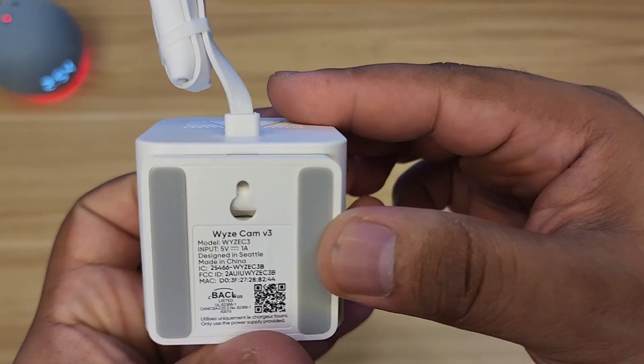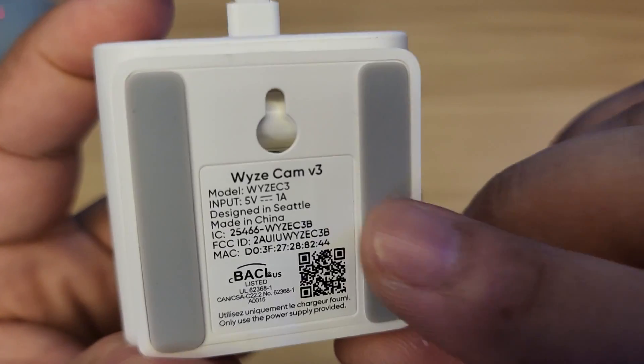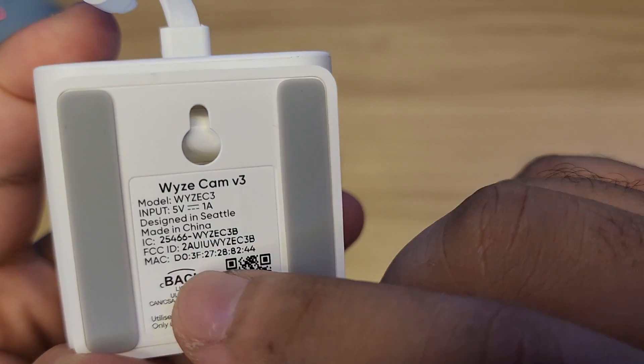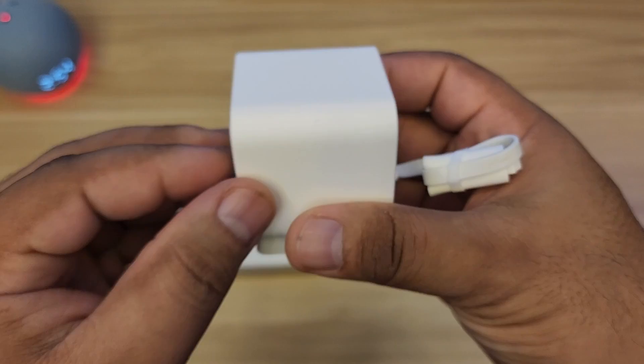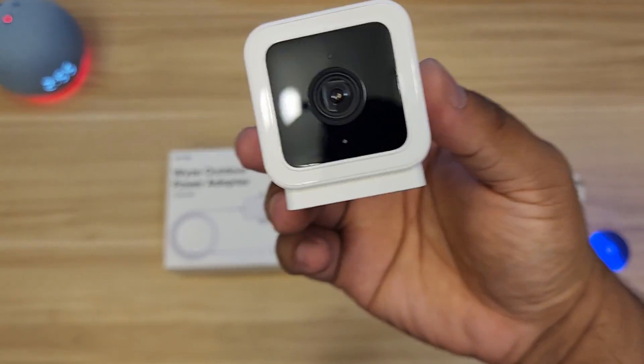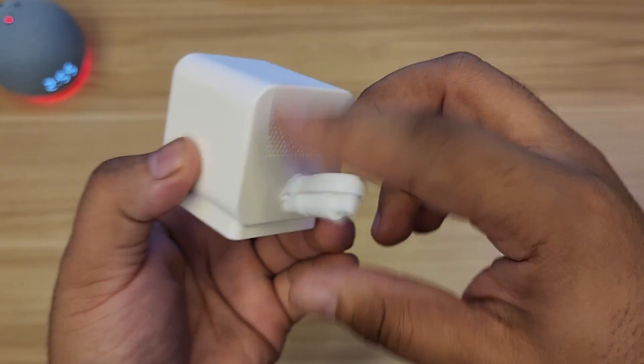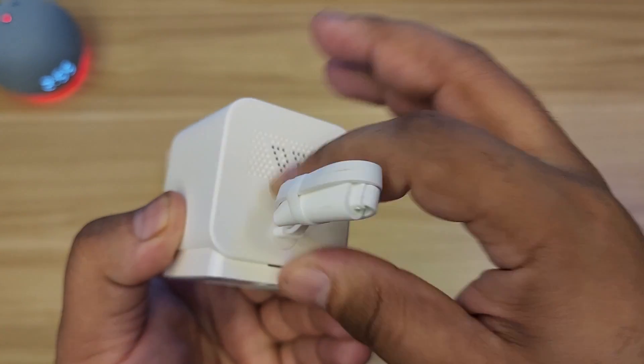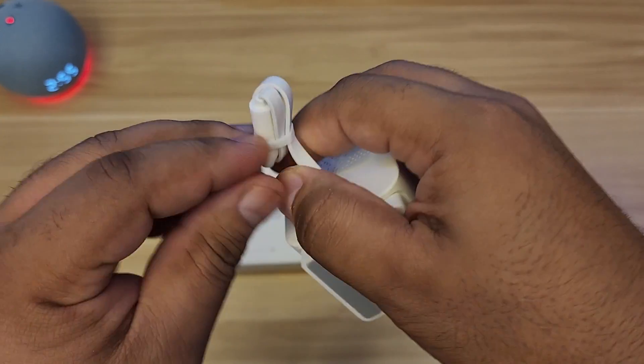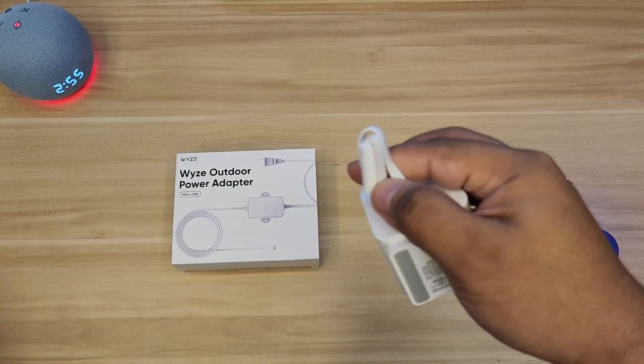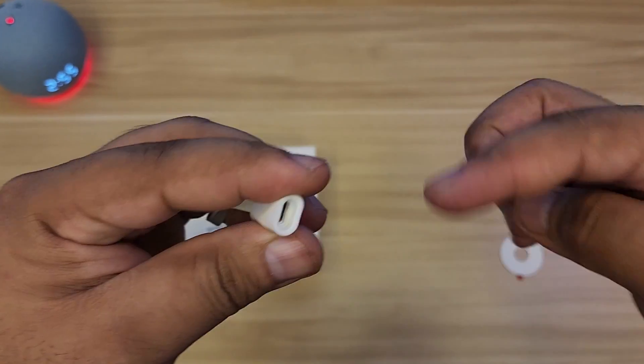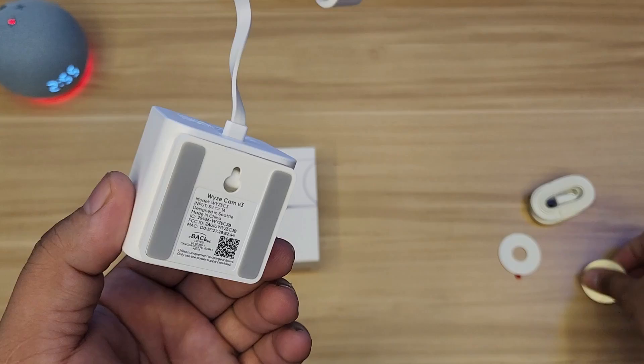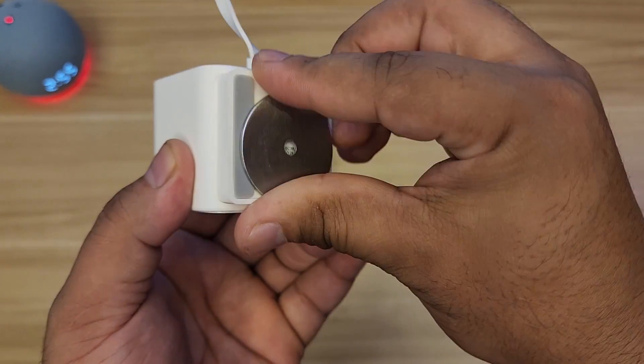This is the camera - the Wyze Cam v3, it's 5 volt, 1 ampere, designed in Seattle, made in China, with MAC address and all that stuff. It's pretty small, very good. On the back, this is the USB. Unfortunately it's not detachable, it's kind of permanent there for waterproofing reasons, but it has this little extension here that you can plug to your USB stuff.